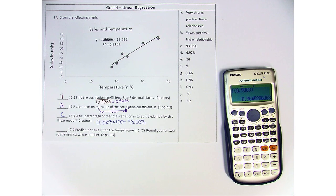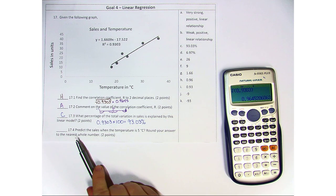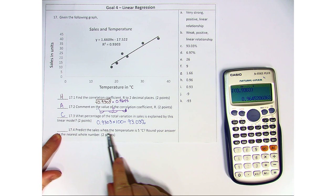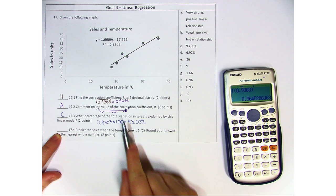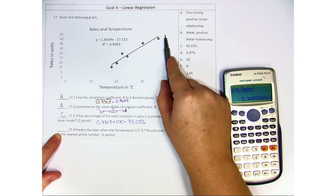If we were looking for something of the total variation that did not explain, you just subtract from 100. 17.4 says, predict the sales when the temperature is 5 degrees Celsius. Now we know this is not going to be a very valid prediction because it's far away from any of our data points.